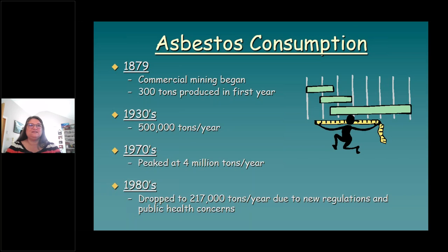Let's look at how much asbestos has been used since commercial mining began in 1879 at Thetford's mines in Canada. During the first year, the Thetford mine produced 300 tons of asbestos. Forty years later, the demand had risen to over 500,000 tons a year. It peaked in the 1970s at 4 million tons a year, but then dropped off dramatically in the 1980s due to new regulations and concerns about the health impacts of asbestos exposure. That's a lot of asbestos being used in our buildings, equipment, and everyday products from 1879 to the 1980s.